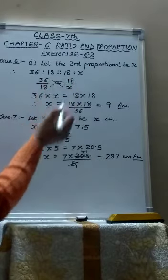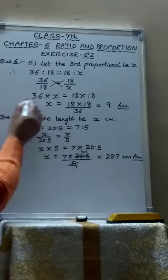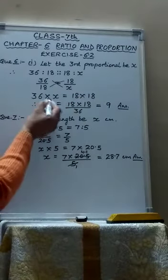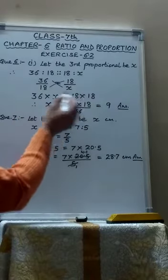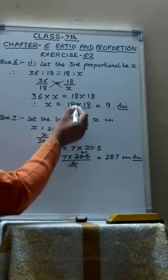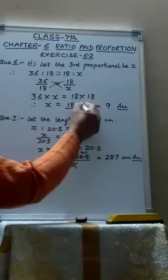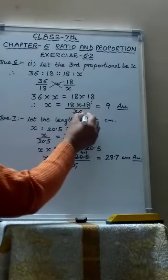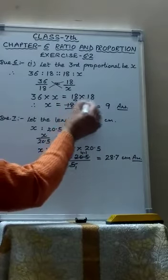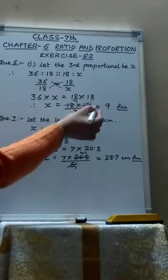So this becomes 36 multiplied by x equals to 18 multiplied by 18. Cross multiplication. So x becomes 18 multiplied by 18 divided by 36. Because here it is multiplied and going to opposite side, the sign changes. Multiplier will become divided. So 18 into 18 divided by 36. So 18, 2's are 36 and 2 9's are 18. So 9 is the third proportional to 36 and 18.